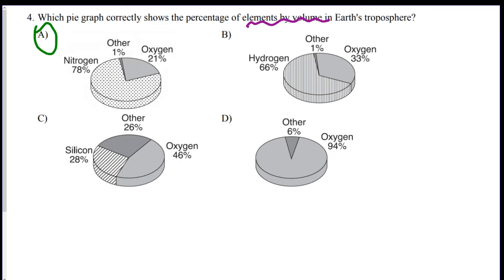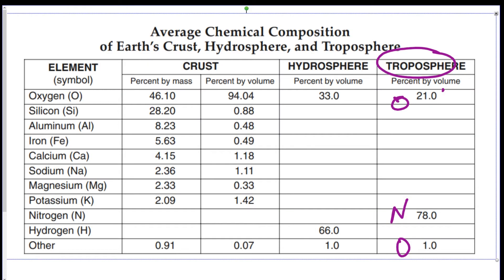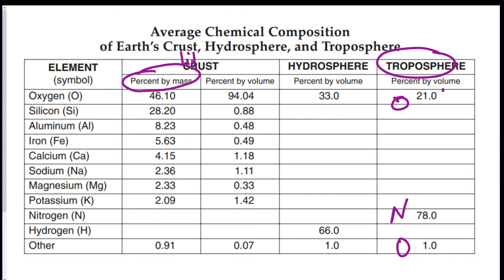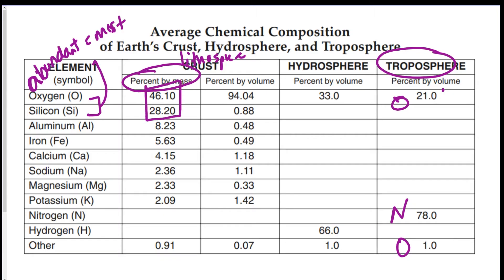Be careful — they could switch and ask for percent by mass instead of percent by volume. Also a popular question: for the crust, which is the lithosphere, the two most abundant elements by mass are silicon and oxygen.